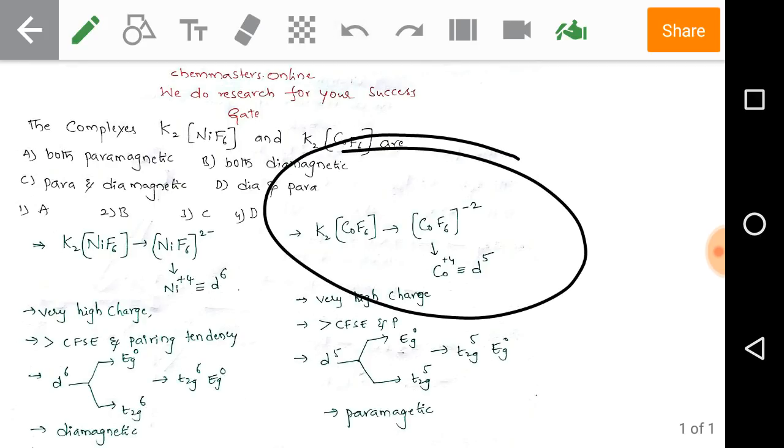Now observe the cobalt complex, the cobalt hexafluoride complex. In this, cobalt has a +4 oxidation state, and when it is in the +4 oxidation state, it has 5 electrons in its d block.